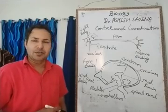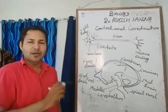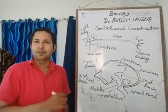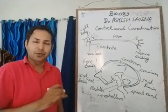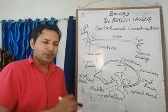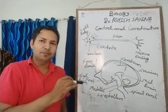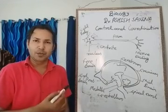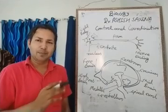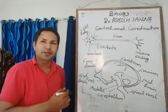The nervous system is of two types: CNS and PNS. CNS means Central Nervous System and PNS means Peripheral Nervous System. The Central Nervous System includes two organs: the brain and spinal cord. The PNS includes nerves arising from the brain — cranial nerves — and from the spinal cord — spinal nerves. ANS means Autonomic Nervous System.